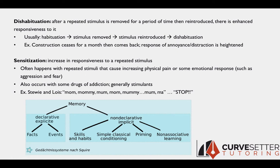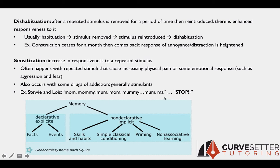An example from pop culture to help remember sensitization: the episode of Family Guy where Stewie is yelling at his mom Lois, saying 'mom, mommy, mom, mommy' over a long period of time. In the beginning Lois seems pretty annoyed, but finally she absolutely explodes. Her level of irritation to the repeated stimulus suddenly increases and she yells at Stewie to stop.